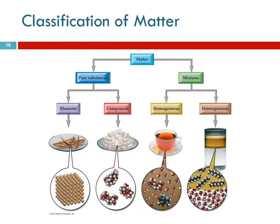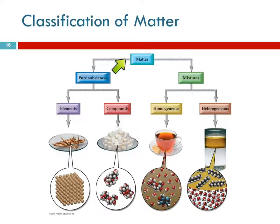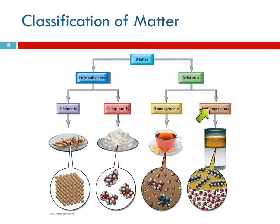Here's a flow chart that summarizes the divisions we're going to look at. We've got matter — we can divide it into pure substances, where all the particles are the same, or mixtures, where there are two or more types of particles. Then we're going to divide mixtures into homogeneous and heterogeneous mixtures, and we'll see that pure substances can be elements or compounds.